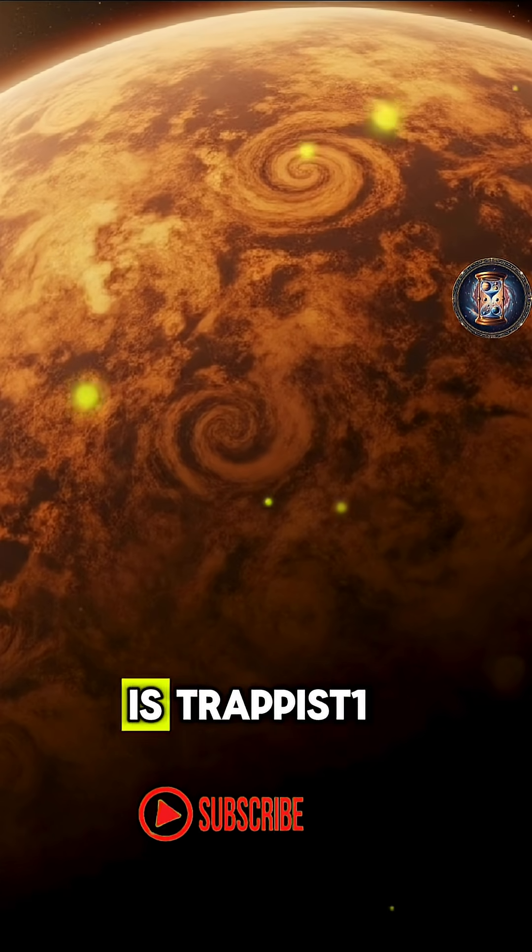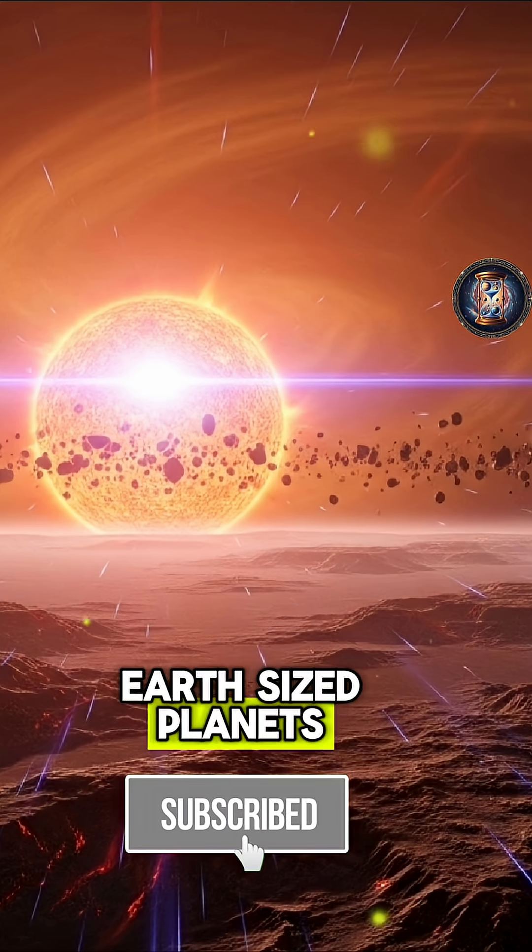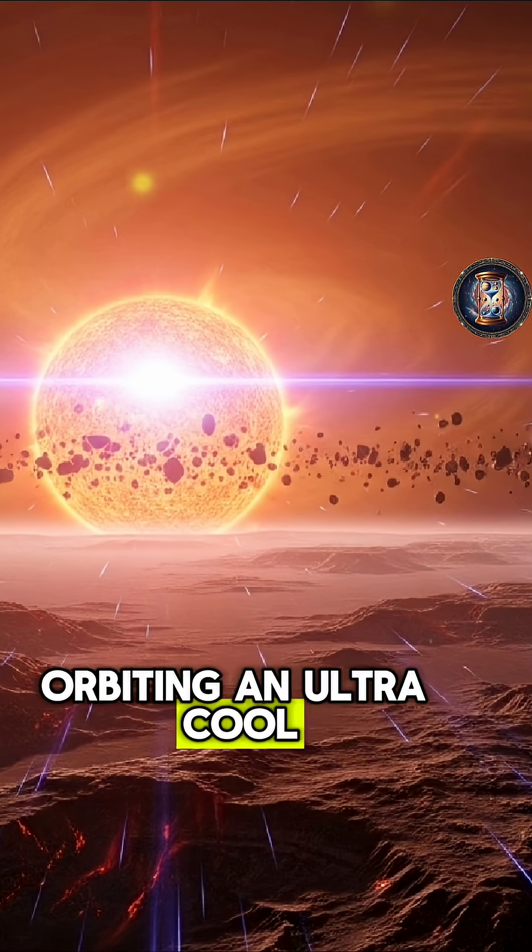Another notable star system is TRAPPIST-1, a system with seven Earth-sized planets orbiting an ultra-cool dwarf star.